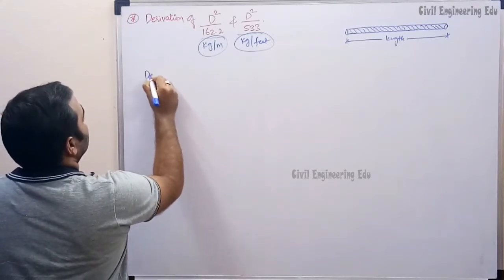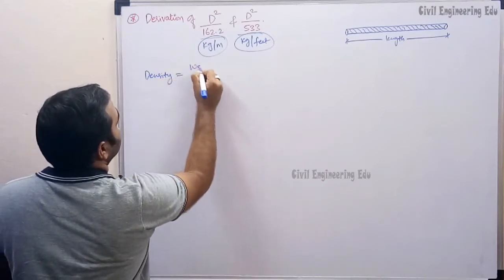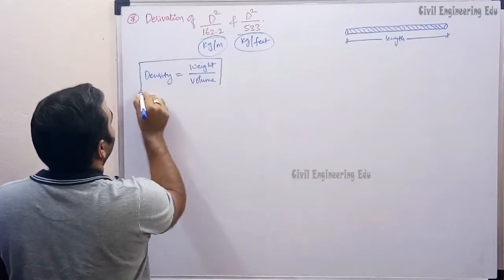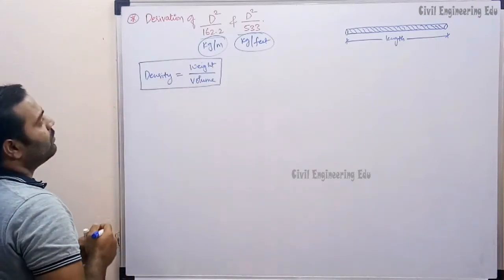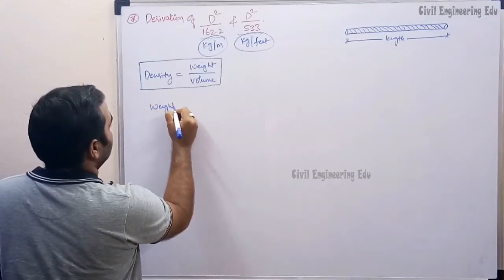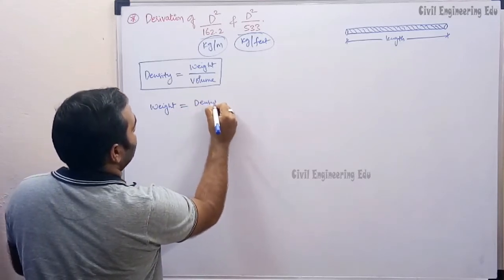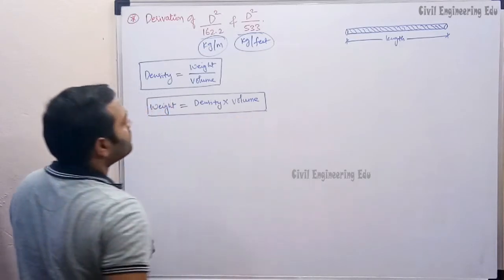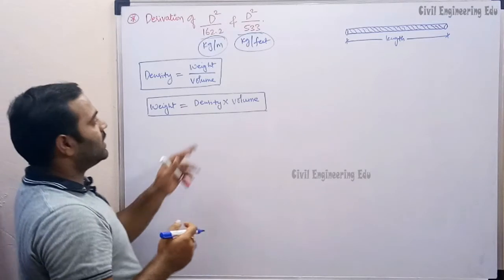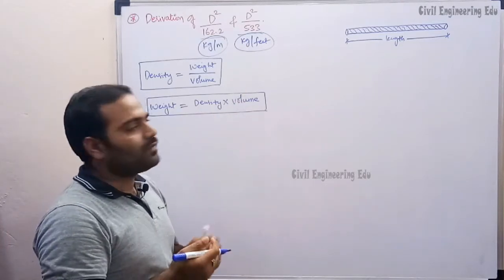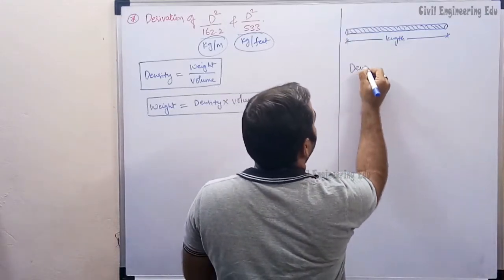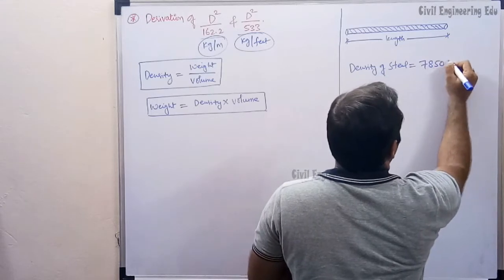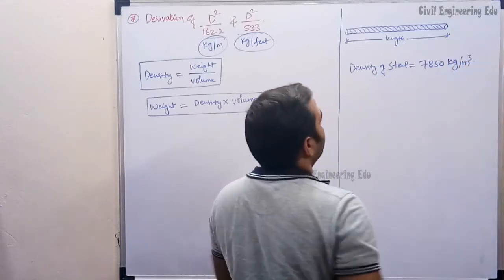First of all, density — as we all know — is weight divided by volume. This is the standard formula. Since I want to find out the weight, weight is equal to density multiplied by volume. As we are calculating the weight of a steel bar, we need to take the density of steel, which is 7850 kg per meter cube.